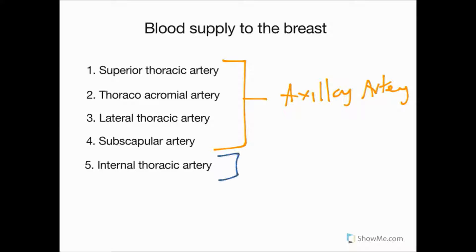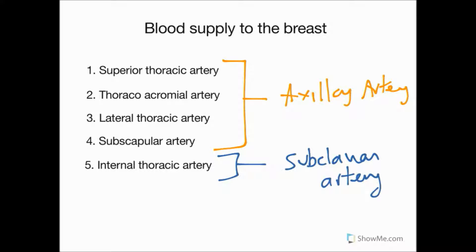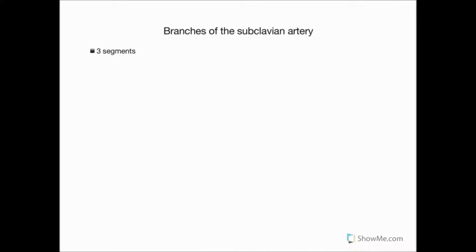The one remaining artery, the internal thoracic, comes from the subclavian. So we are going to look at the branches of the subclavian, then the axillary, and we're going to be looking out for these five named vessels that supply the breast.